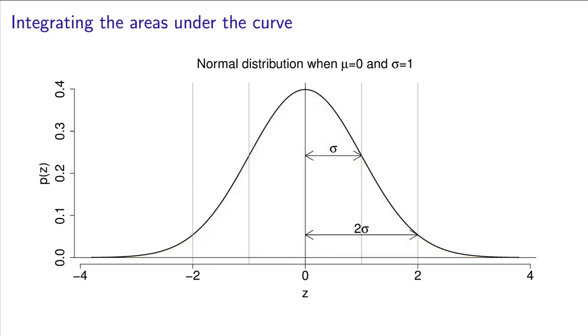For example, what is the cumulative area up to a value of z equals zero? It is 50% because we stopped halfway, and we know the distribution is symmetric.